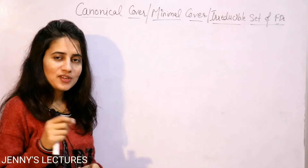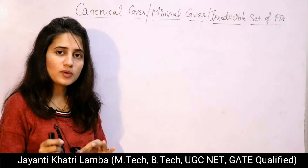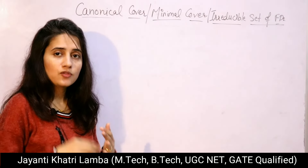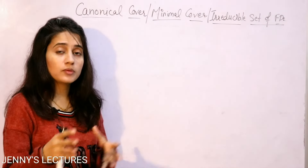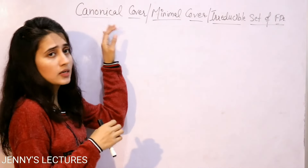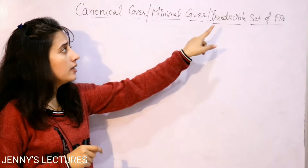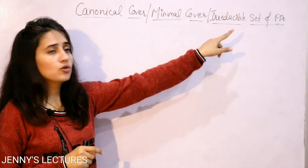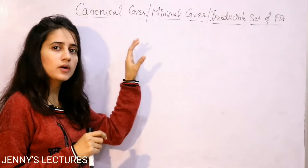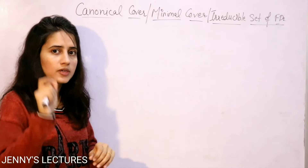So far in this lecture series of DBMS, we have discussed normalization and normal forms — first, second, third, and BCNF. We are left with fourth and fifth normal form. Before going to that topic, I'm going to cover a small topic: canonical cover, or minimal cover, or irreducible set of functional dependencies. How to find out canonical cover from a given functional dependency set — we will discuss it with the help of a proper example.